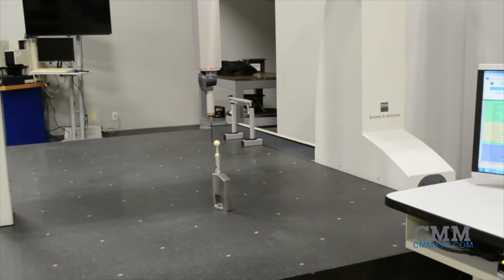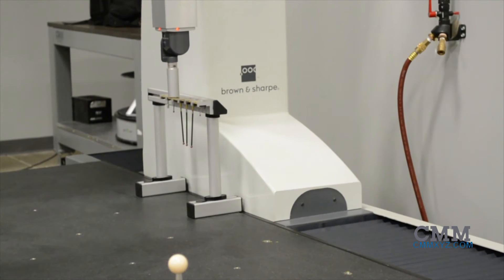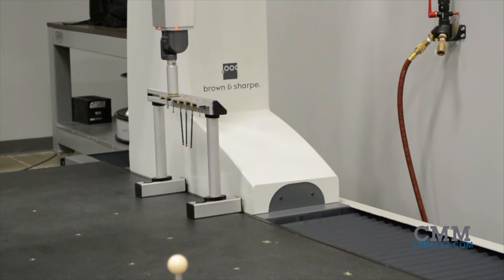The machine has an overall measuring volume of 1,500 mm in the X, 2,200 mm in the Y, and 1,000 mm in the Z, which is 59 inches by 86 inches by 39 inches respectively.